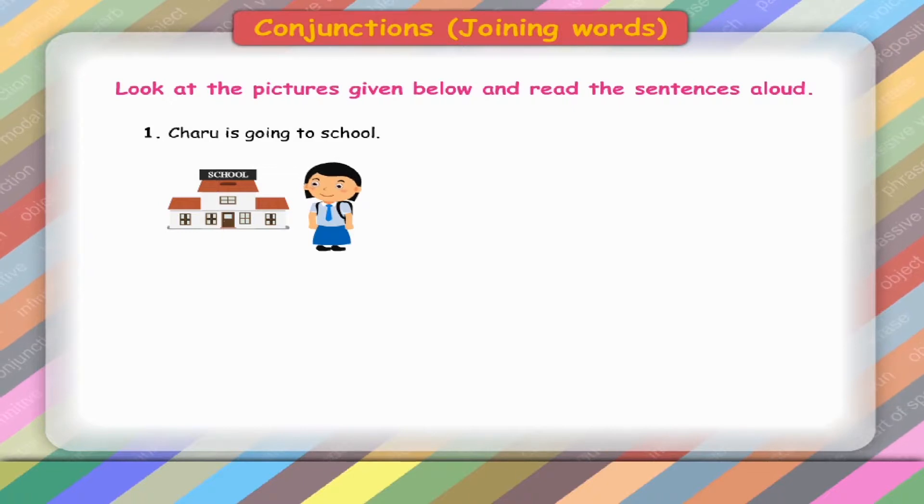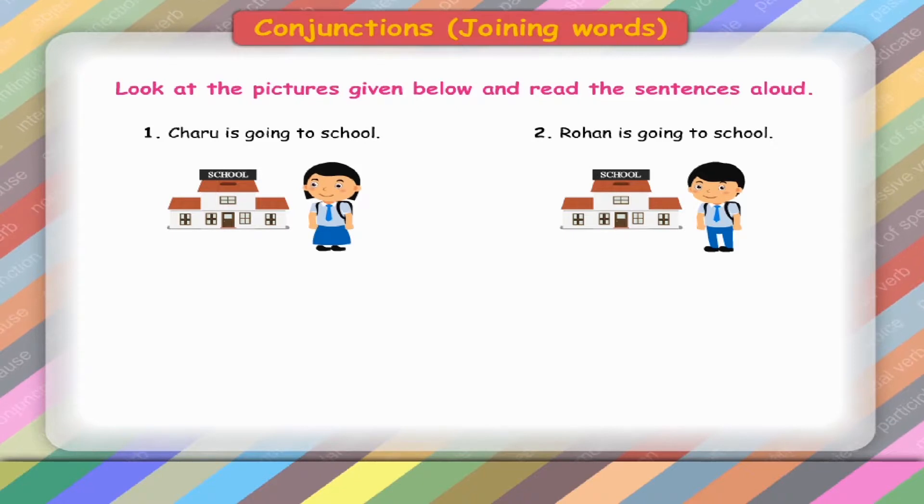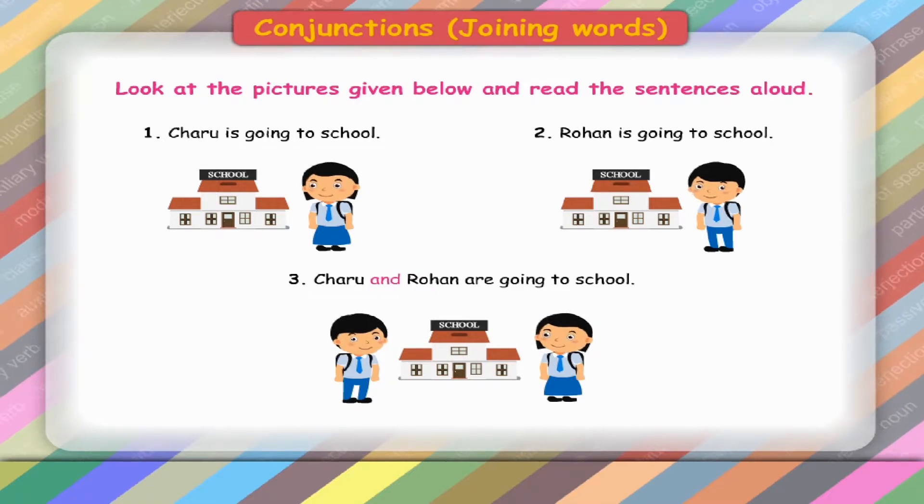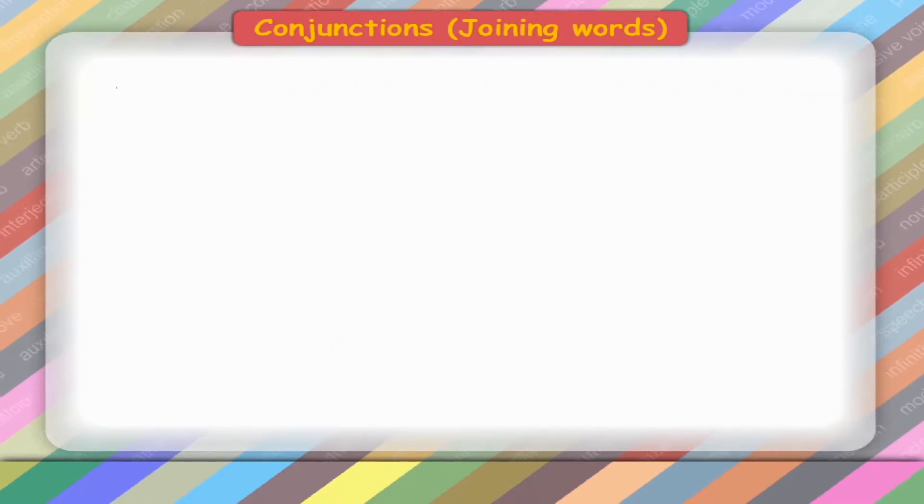Charu is going to school. Rohan is going to school. Charu and Rohan are going to school. We use and when we want to join two words or sentences of same ideas.